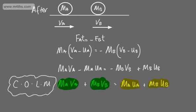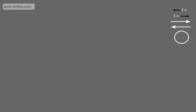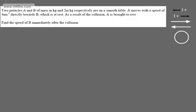In later videos we will look at exam-style questions, but for now I just want to get some basics down. What we've got here is two particles A and B of mass m kilograms and 2m kilograms respectively on a smooth table. A moves with a speed of 4 metres per second directly towards B, which is at rest. As a result of the collision, A is brought to rest. We need to find the speed of B immediately after the collision.